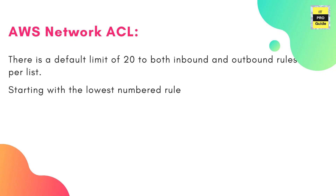In AWS, you can list rules with rule numbers and evaluation starts with the lowest numbered rule. As soon as a rule matches the traffic, it is applied regardless of any higher-numbered rule that might contradict it. For example, if you have two rules for port 80 — rule number 100 to allow and rule number 200 to deny — the result is always that port 80 traffic is allowed, because the lower number is executed regardless of what is written in the higher numbers.